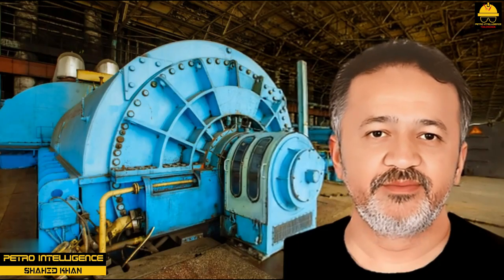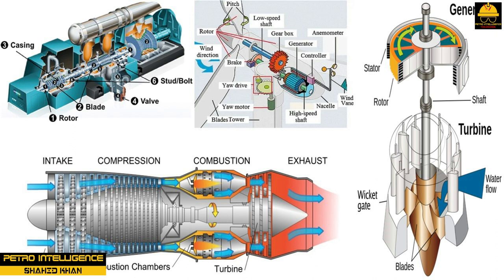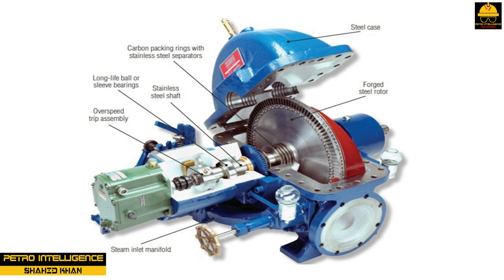Turbines are classified according to their principle of operation and the type of fluid that turns them. The four main types of turbines are steam, gas, hydraulic, and wind. In steam turbines, impulse movement — the rotor turns in response to the force or velocity of a gas. In hydraulic turbines, reaction movement — the rotor turns in response to the pressure of a liquid. Gas turbines use high pressure gases and wind turbines or windmills use air pressure. Steam and gas turbines are the two types most commonly used in industry.